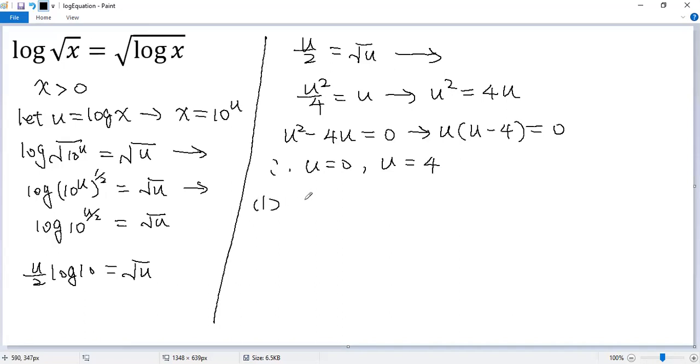For the first case, when u equals 0, we can get back to x. So x equals 10 to the power of u. So, 10 to the power of 0, which is 1. That's greater than 0. Good.